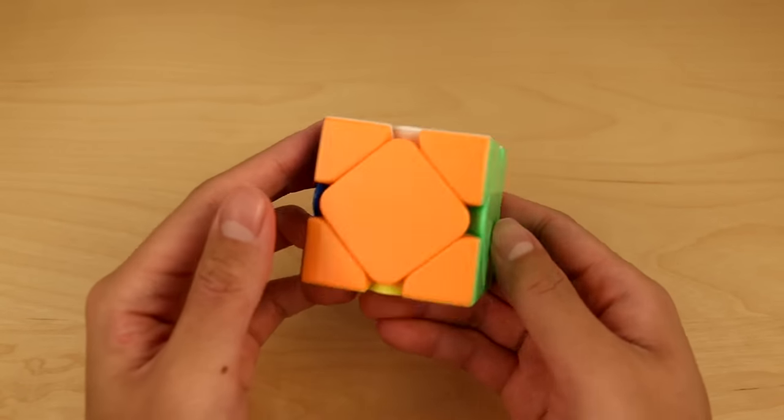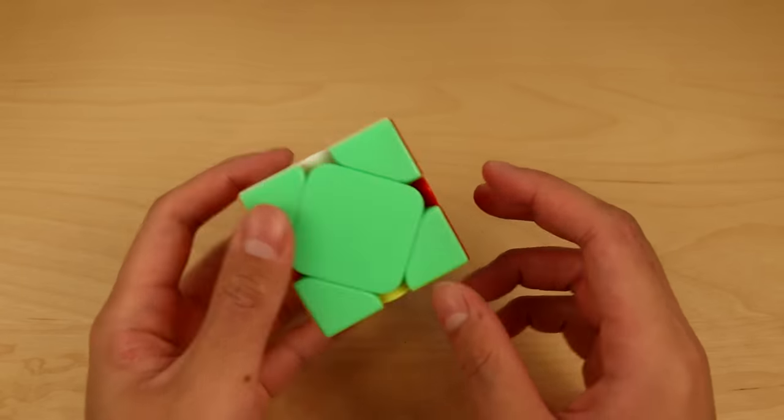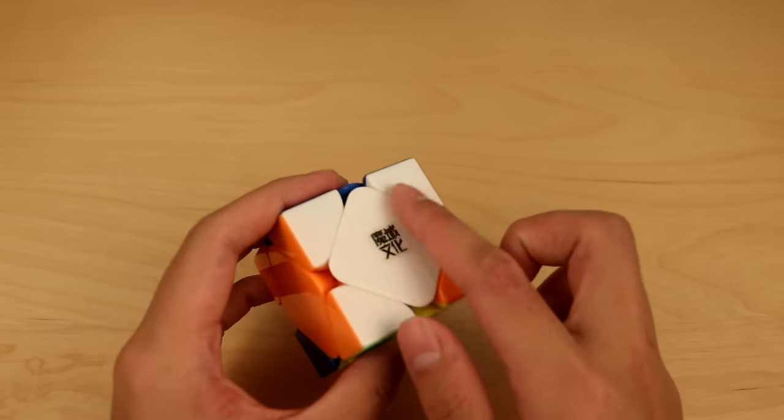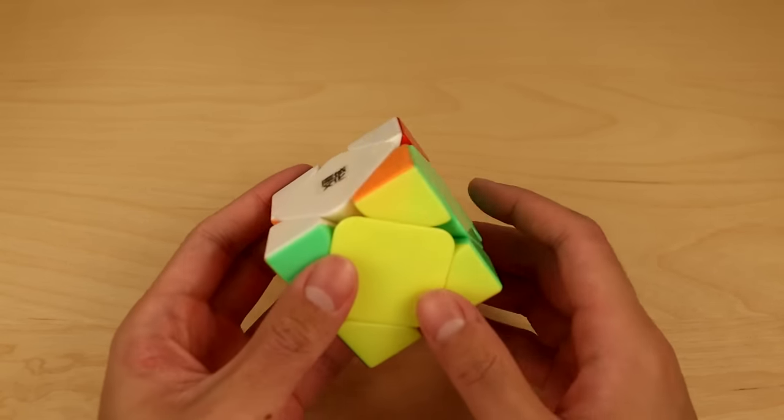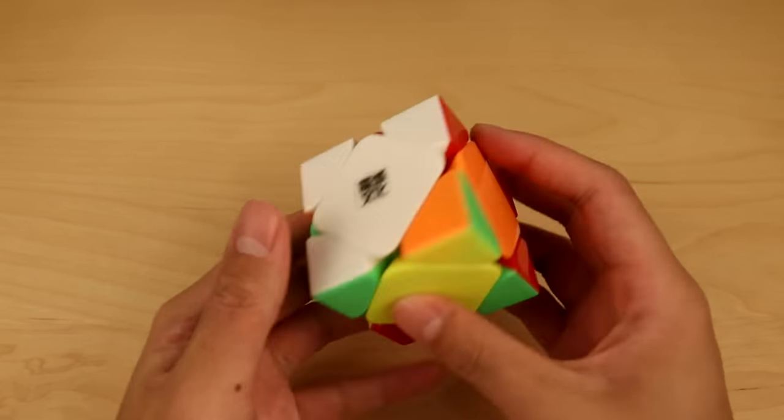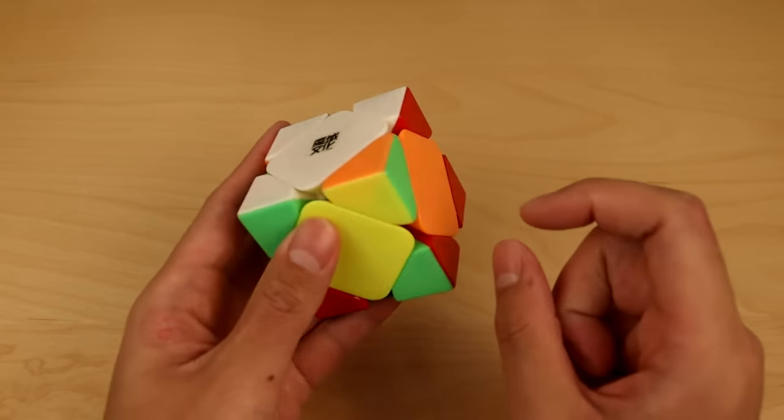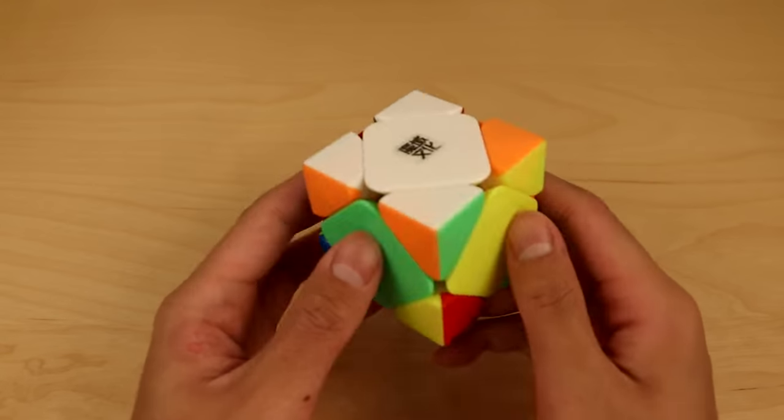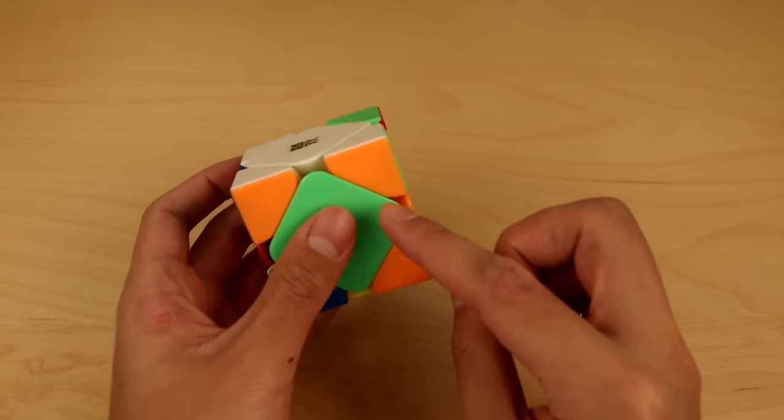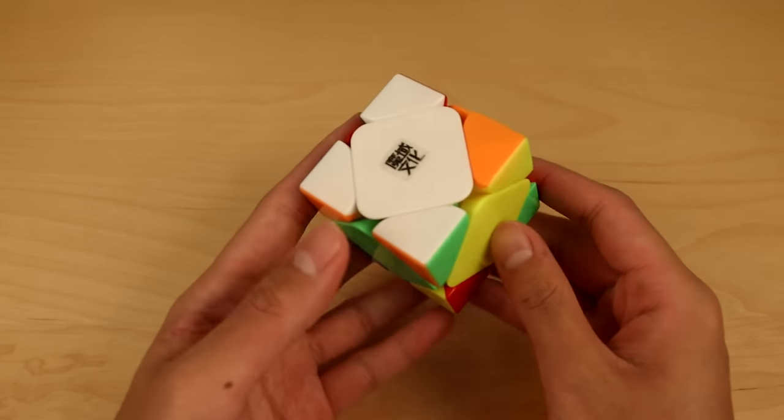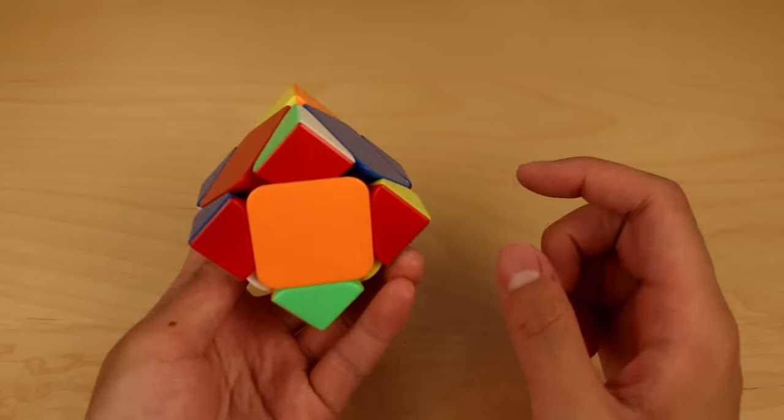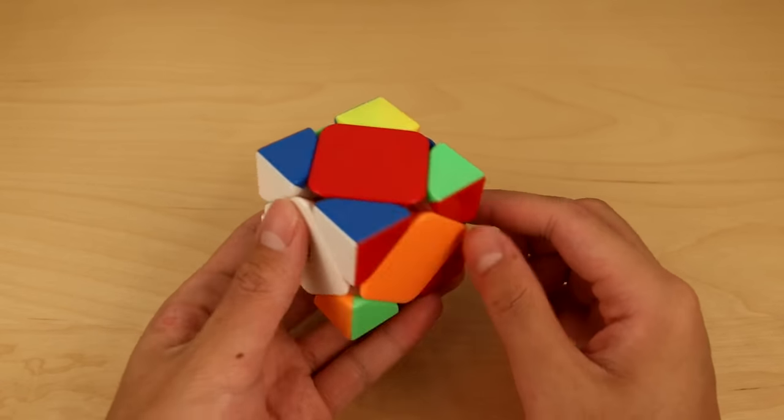Now Skewb is an event that is a lot harder to do this with, but if you're able to get good at recognition, being able to make pseudo layers opens up your options a ton. Here's an example: you have the white layer that's almost done. So instead of making the layer, how about we notice this piece right here? It's one move away from this position, which is solved. So you can treat this as a pseudo layer.